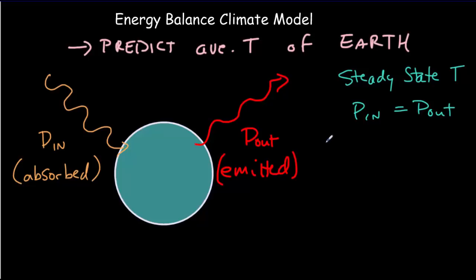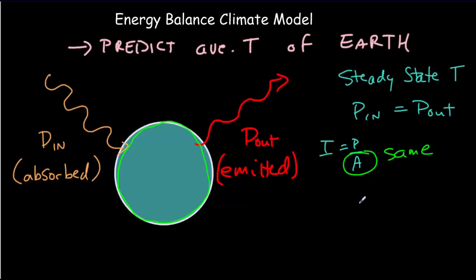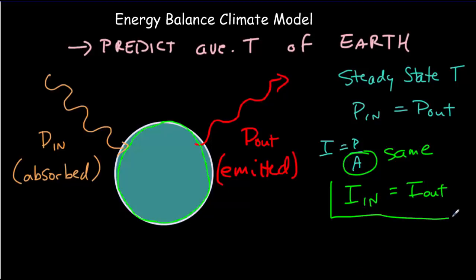Keep in mind that intensity is power per unit surface area, and the surface area of the input power and the output power are the same. Which means we can rewrite this equation in terms of intensity: the intensity coming into the Earth must be equal to the intensity coming out of the Earth. And we're going to work with this equation.